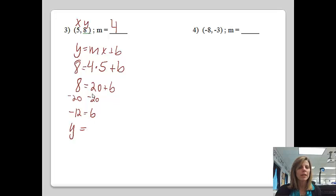And then from here, I have y equals my m again, which was 4x, and then my b, which is minus 12. So that would be the equation of the line.